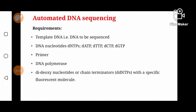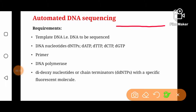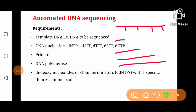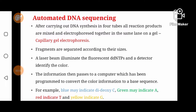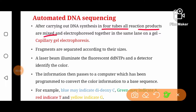The goal is to produce all possible sized fragments of the template DNA, complementary to the template. For example, if the template DNA has four nucleotides, in the four reaction tubes we produce all possible sized fragments: a fragment may be a single nucleotide long, or two nucleotides, or three nucleotides long, up to a full four-nucleotide stretch of the template DNA.